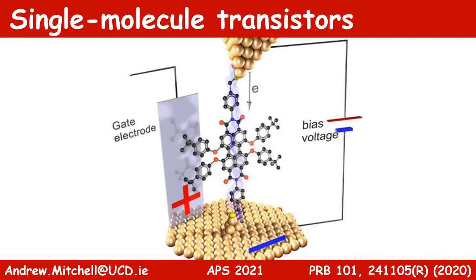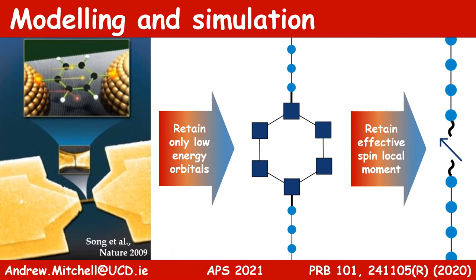We need to understand the structure-function relation for quantum transport through a single molecule junction. This necessitates accurate quantum simulations, but this is a famously difficult problem in quantum many-body physics because of strong electron interactions on the molecule and hybridization to the 10^23 conduction electrons in the leads. The modeling and simulation of such systems involves mapping the bare model with all its microscopic complexities to a simpler effective model. The effective model must retain enough detail to capture the physics of interest, typically at a reduced temperature or energy scale, yet be computationally tractable. The quantum impurity models consist of a few strongly correlated local effective degrees of freedom, or local moment spins, coupled to fermionic reservoirs of lead conduction electrons.